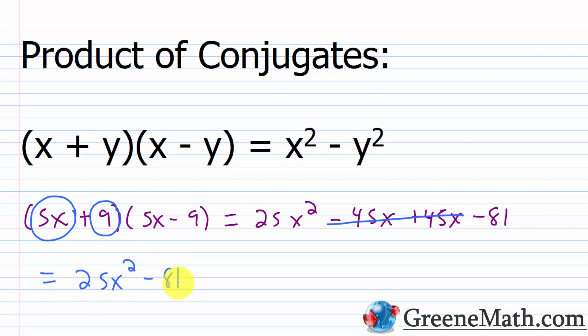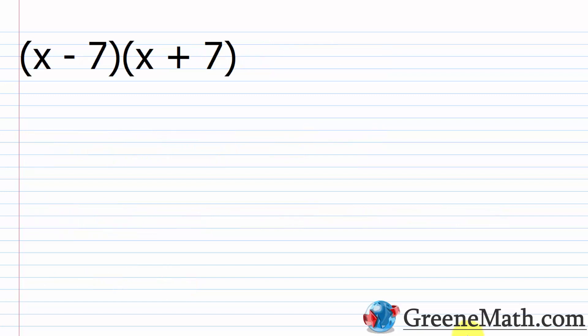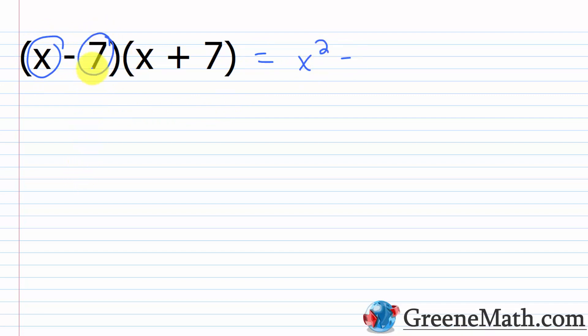If you have the product of conjugates, it's the first guy squared minus the second guy squared. For example, x minus 7 times x plus 7 — I don't need to foil. First guy squared is x², minus second guy squared: 7 squared is 49. So the answer is x² minus 49. Very, very easy.